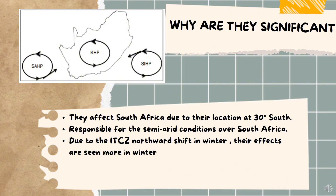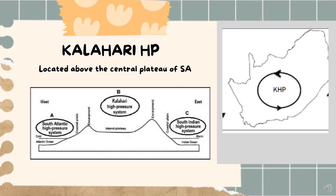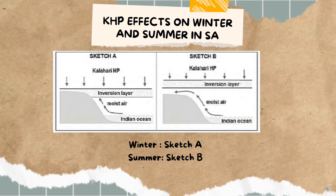Because of the ITCZ — the Intertropical Convergence Zone — in winter it shifts northwards, which is why we see the impacts of anticyclones more in winter. In winter they are directly over South Africa, compared to summer where they occur south of South Africa. The Kalahari High Pressure cell is the one you need to know best, as it has the biggest influence over South Africa's climate.